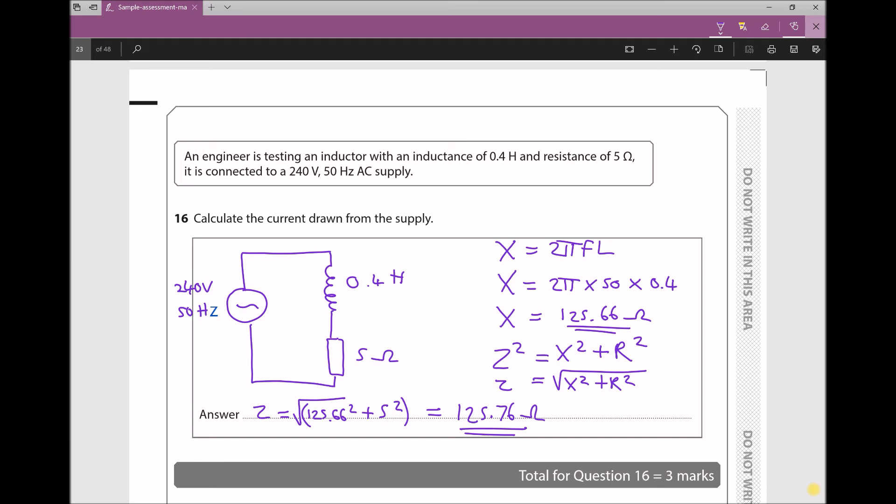So the question is asking us to calculate the current drawn. We need to use an equation similar to Ohm's law where we say V equals IR, but instead we say V equals IZ, where Z is our impedance.